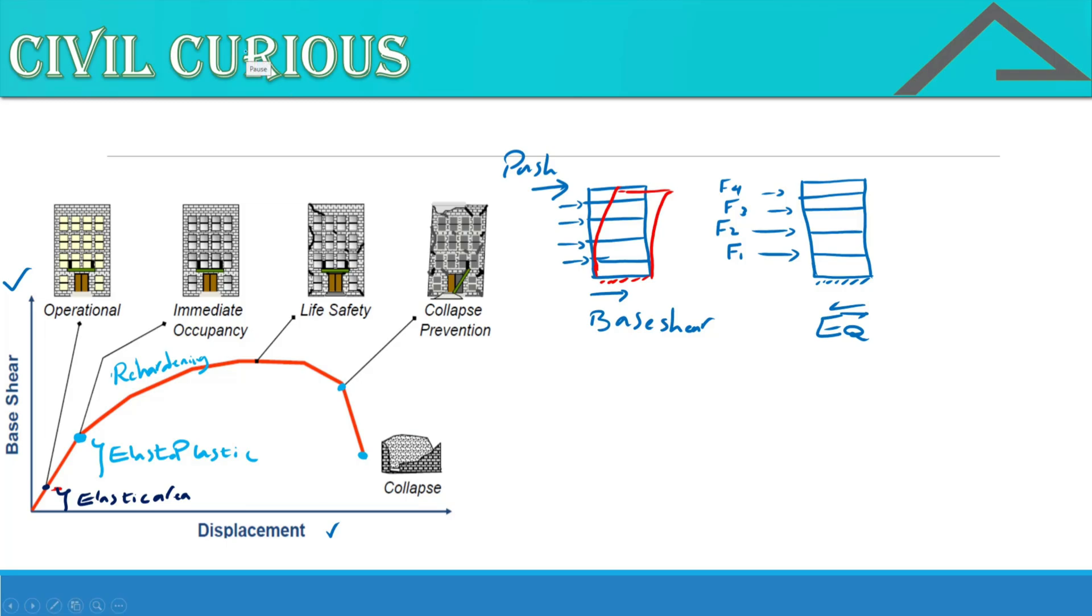In the performance-based design we have four major performance levels that we call them. I'll write them here. IO, LS, and CP. IO means Immediate Occupancy, that shows the little displacement, little non-linearity in earthquake or seismic loading.